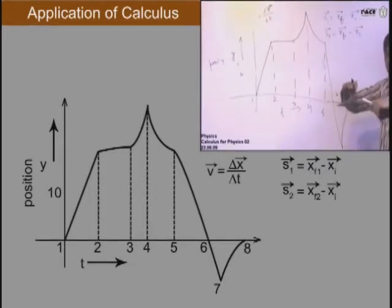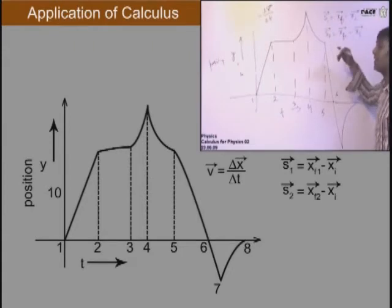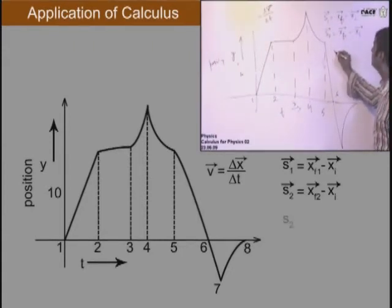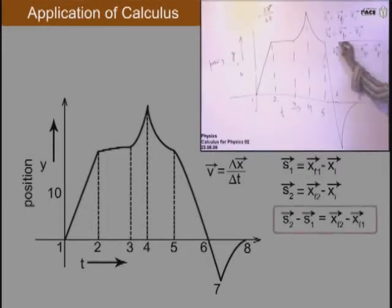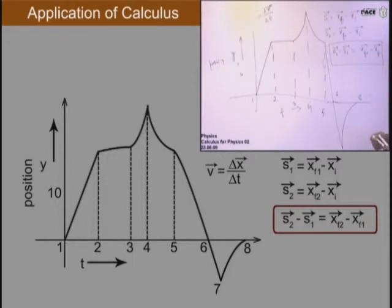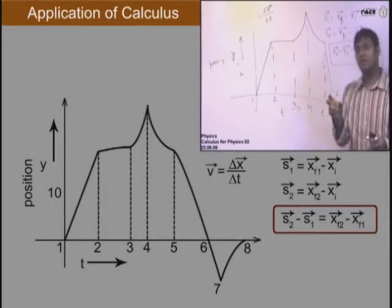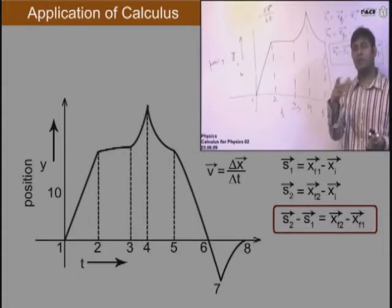Now what is change in displacement? Delta displacement will be s2 minus s1. But then we are limiting this displacement in a time interval — so there is no displacement or change in position outside that time interval.